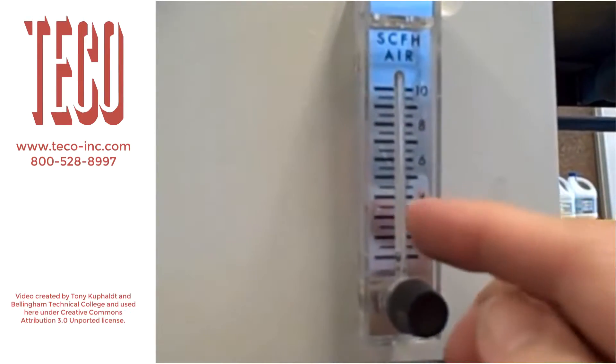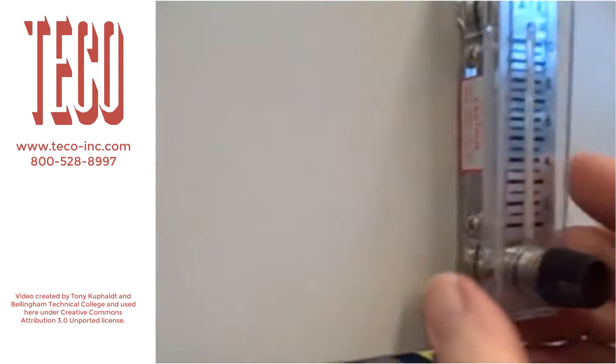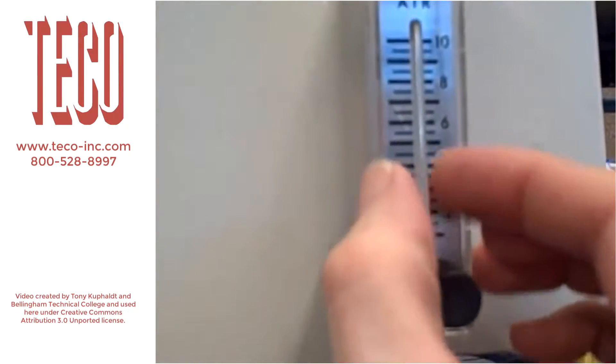The way a rotometer works, it's a small tube or channel cut into a block, either plastic or glass, and that tube has a cone shape. Starts small at the bottom and grows wider at the top.